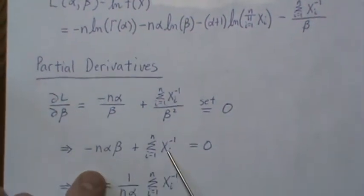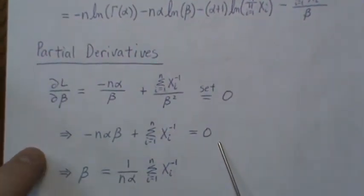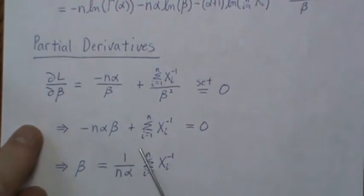One of them cancel and we're left with 1, and we get this. Now if we take beta to the other side and then divide by n times alpha, we get this.